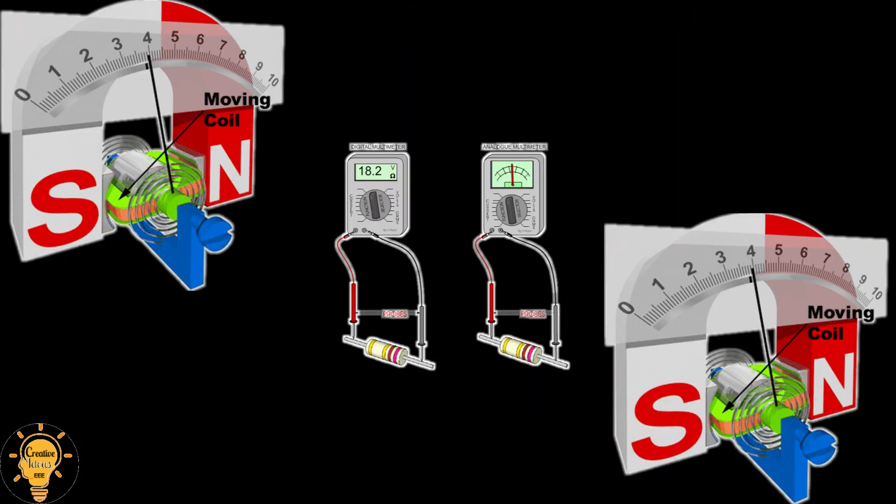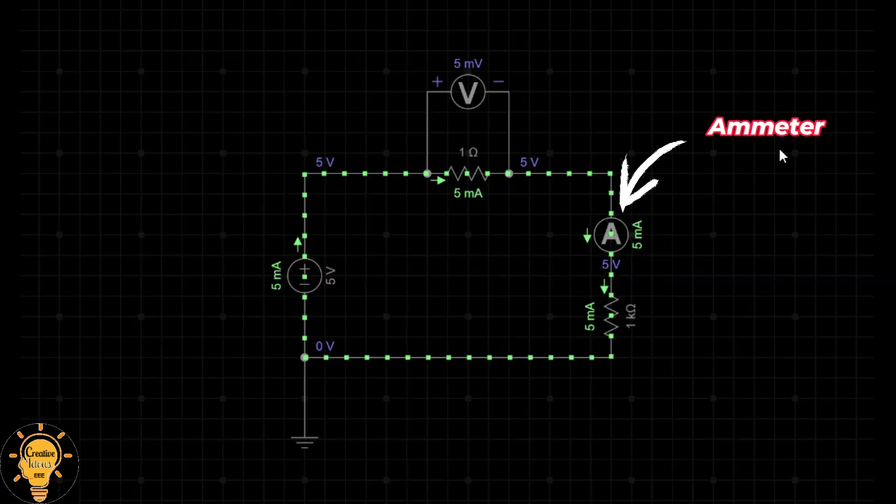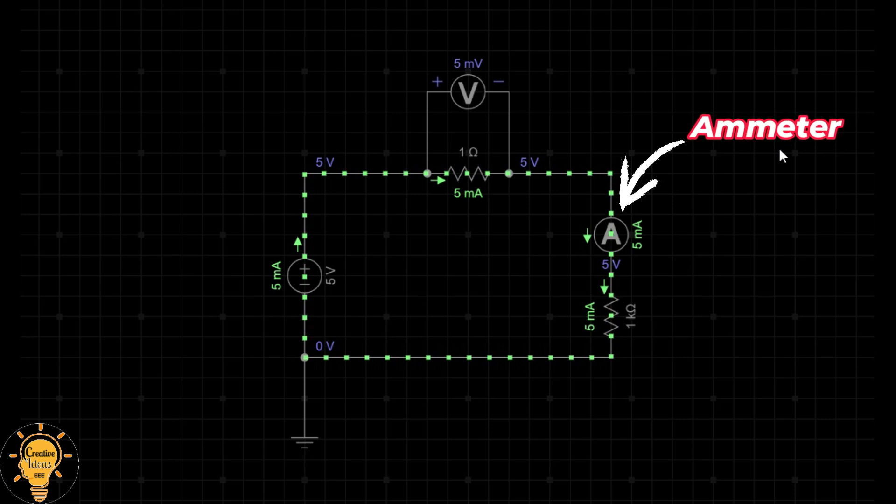Shunt resistors are commonly used in current measuring devices called ammeters. In an ammeter, the shunt resistance is connected in parallel. An ammeter is connected in series with a device or circuit.